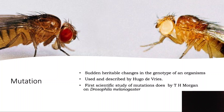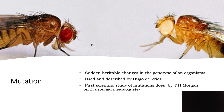T.H. Morgan studied a lot of genetics in Drosophila melanogaster. When he was studying Drosophila, he found that the majority of organisms have a red eye. But there are some individuals which have a white eye. We call the white-eyed varieties the mutant varieties, and the normal red-eyed population the wild type.